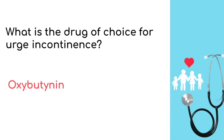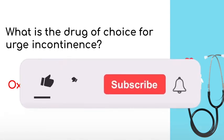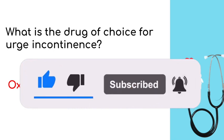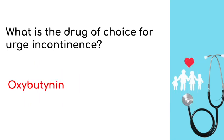What is the drug of choice for urge incontinence? Oxybutynin. In urge incontinence, there is a hypertonic detrusor muscle which leads to an overactive bladder. The first line is behavioral changes such as bladder training exercises or timed voiding, but if that fails, we move on to drugs such as oxybutynin.